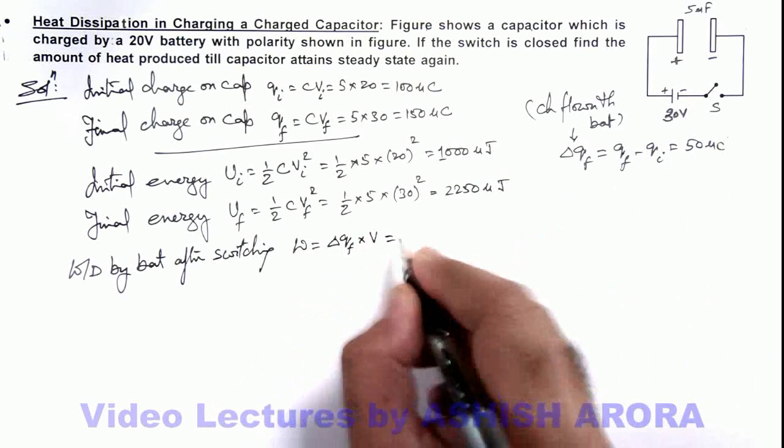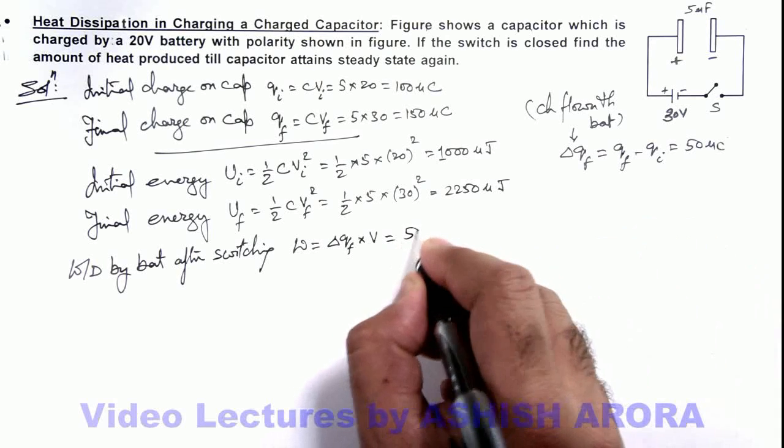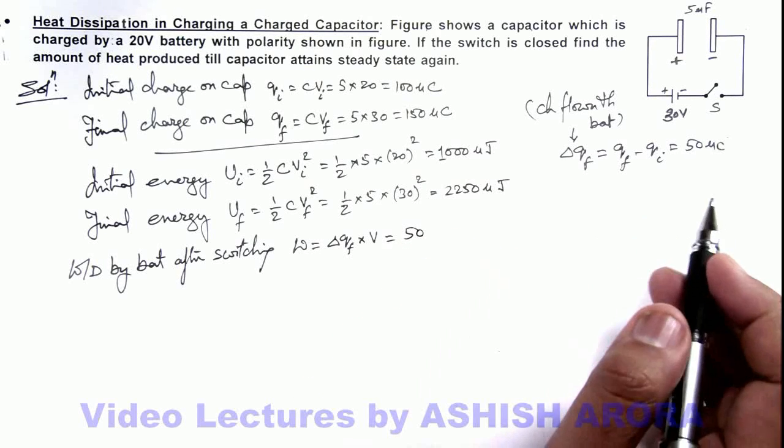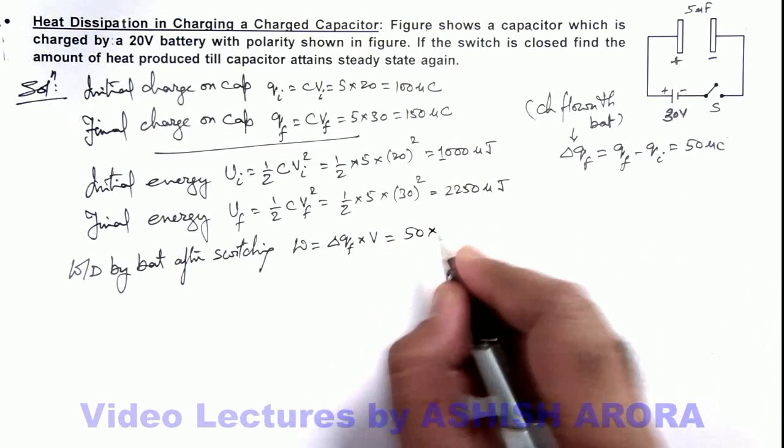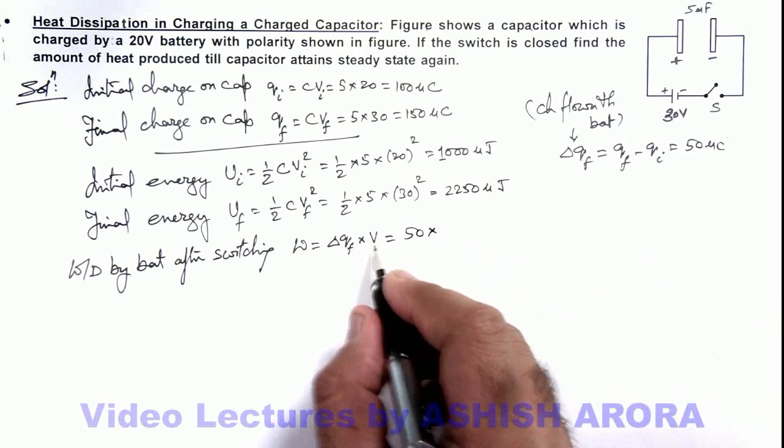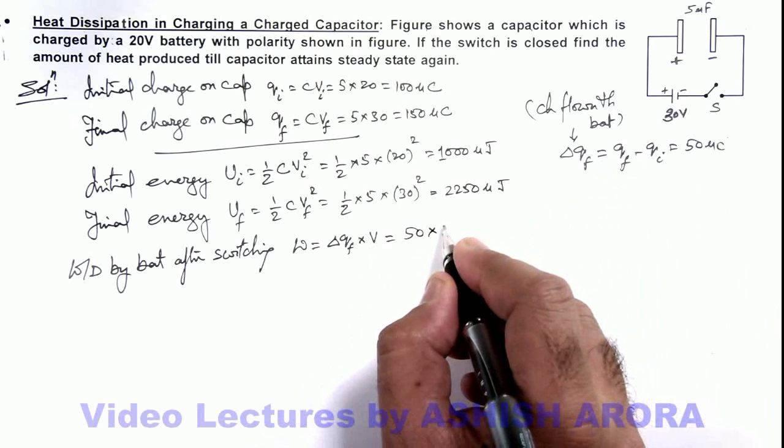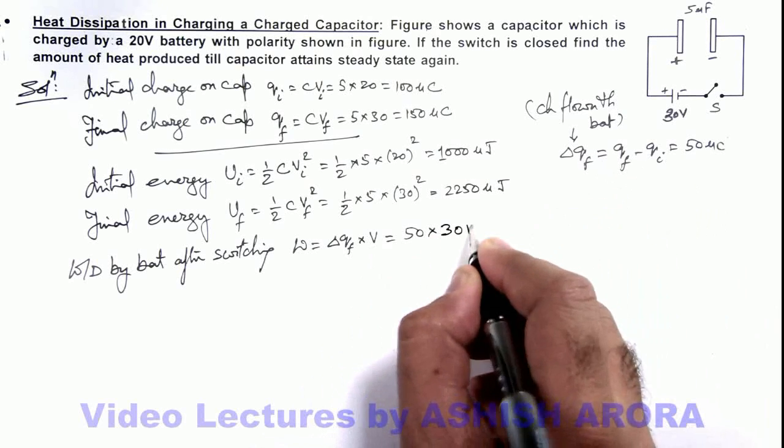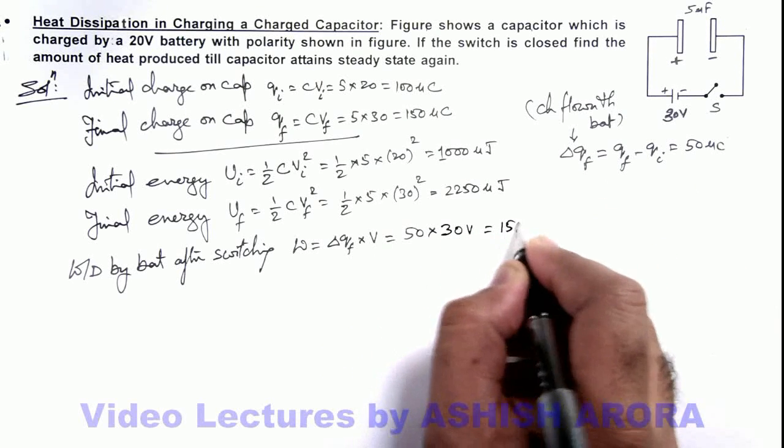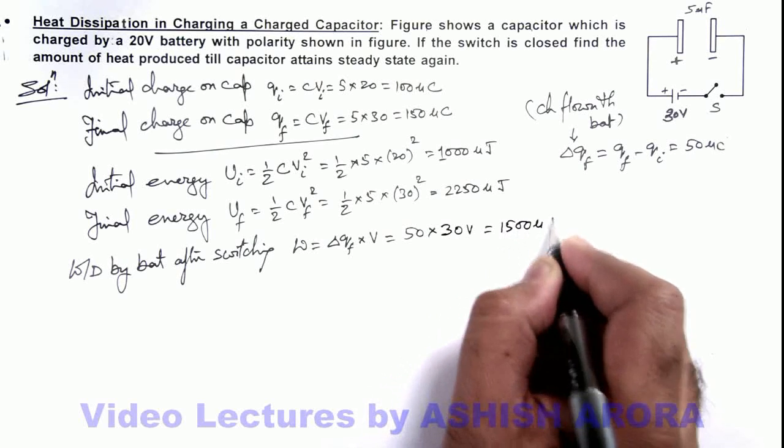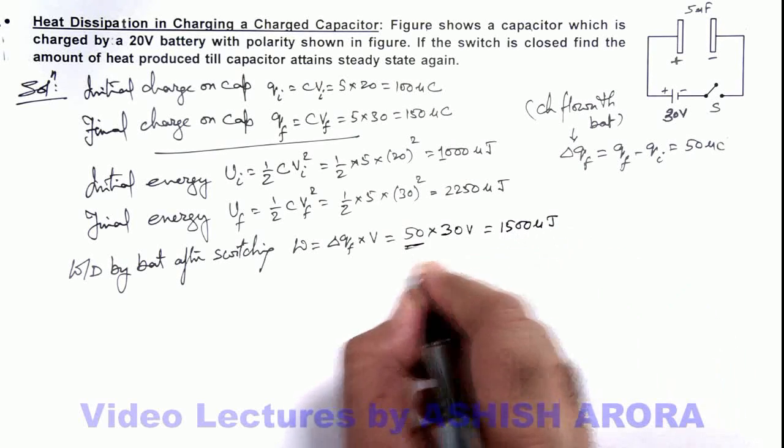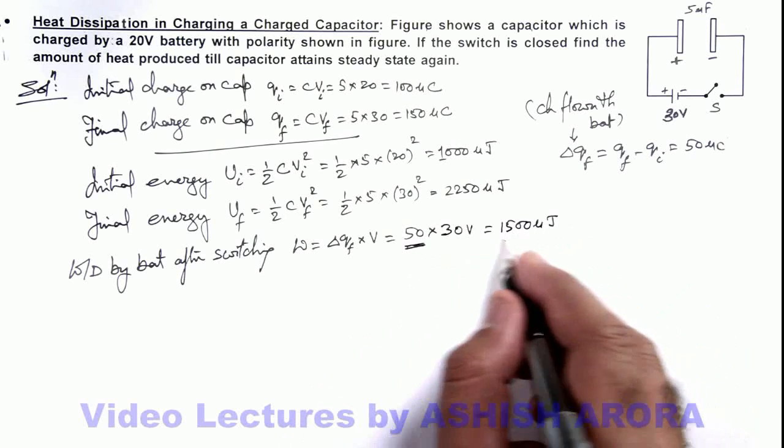So this we can write as charge flown as 50 microcoulomb multiplied by the potential difference across the battery, here we can write as 30 volt. So the value we are getting is 1500 microjoule, because the value of charge is in microcoulomb so unit will be microjoule.